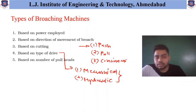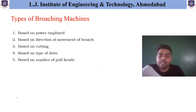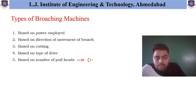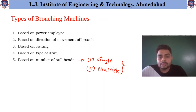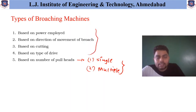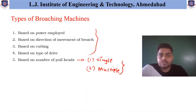The last classification is based on number of pull heads — whether a single head is pulled or multiple heads are available. These are the ways the broaching machine is divided. According to different applications, different types of broaching machines are available, and these machines are essentially combinations of these different classifications.